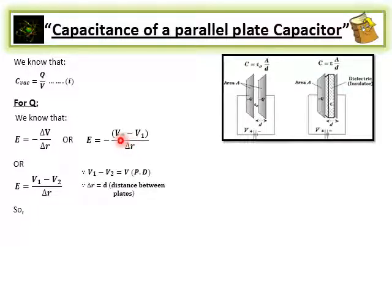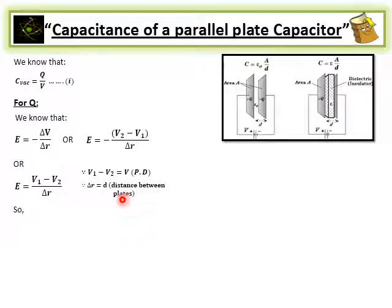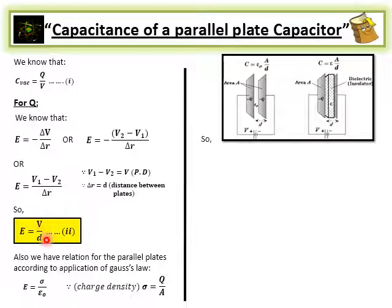Arranging this equation, we get E = (V₁ − V₂) / Δr, because taking the negative sign common changes minus to plus. Here V₁ − V₂ is the potential difference V, and Δr represents the distance between the plates, which is small d, as shown in the figure. So we can write E = V/d. This is equation number 2.